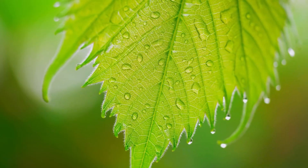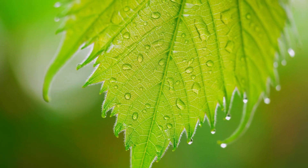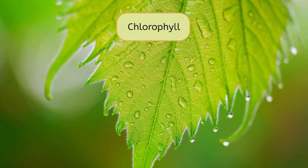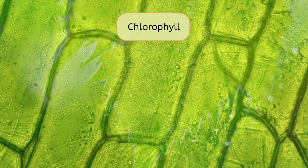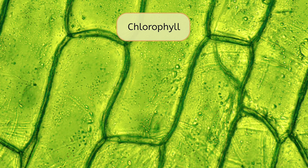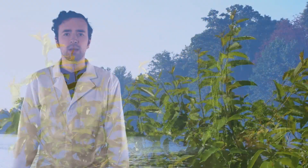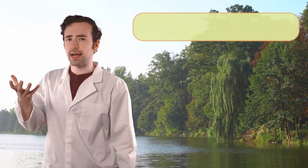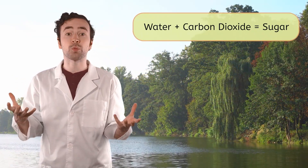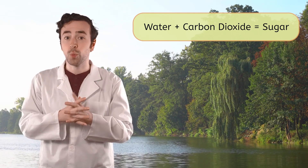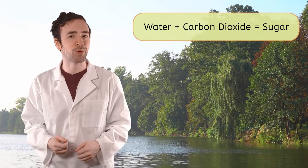All plant leaves contain a special substance called chlorophyll. Mia, can you zoom in on this leaf? Thank you. Chlorophyll gives leaves their green color, and one of its jobs is to absorb sunlight, which is then converted into energy for the plant. The leaves also absorb carbon dioxide, something that's found in the air we breathe. The leaves combine the carbon dioxide with the water absorbed by the roots to create sugar, which the plant will use as food to help them grow.